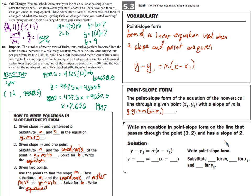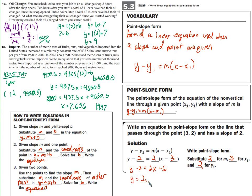Given a point and slope, we use y - y1 = m(x - x1). For example, with slope 2 and a point: substitute 2 for m, 3 for x1, and 2 for y1. We could call it done there, or solve for y by distributing: y - 2 = 2x - 6, then add 2 to both sides to get y = 2x - 4.